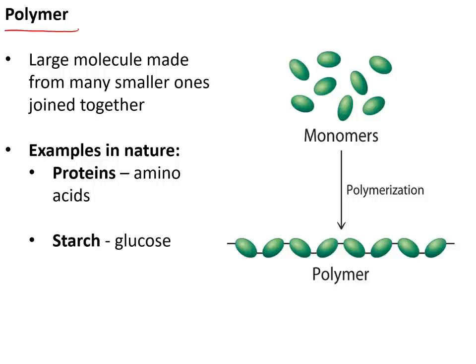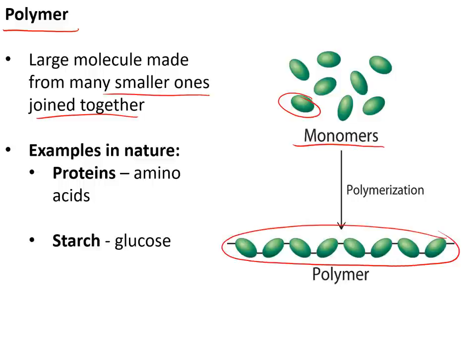A polymer is a large molecule made from many smaller ones joined together — we call those small molecules monomers. Important examples in nature are proteins, which are made from amino acids joined together, and starch, which is made from glucose monomers joined together.